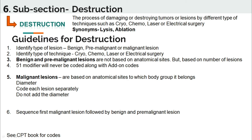The coder assigns the code based on number of lesions for benign or pre-malignant lesions. Remember: modifier 51 should never be coded along with add-on codes — this guideline applies to all add-on codes in the CPT book. For malignant lesions, there are different guidelines.